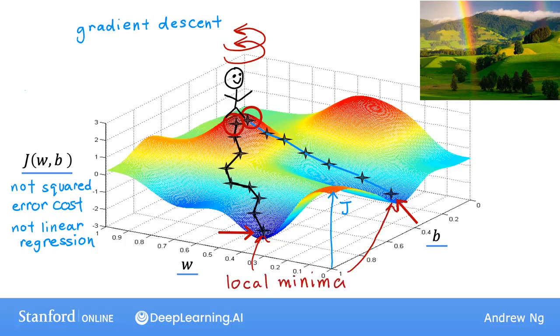This different minimum over here on the right. The bottoms of both the first and the second valleys are called local minima, because if you start going down the first valley, gradient descent won't lead you to the second valley. And the same is true. If you started going down the second valley, you would stay in that second minimum and not find your way into the first local minimum. So this is an interesting property of the gradient descent algorithm, and you'll see more about this later.